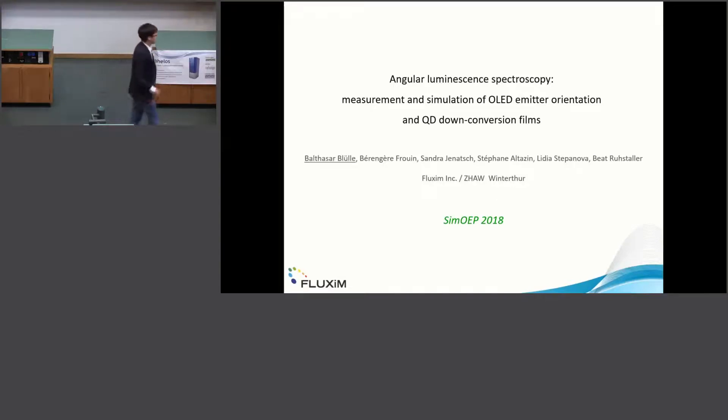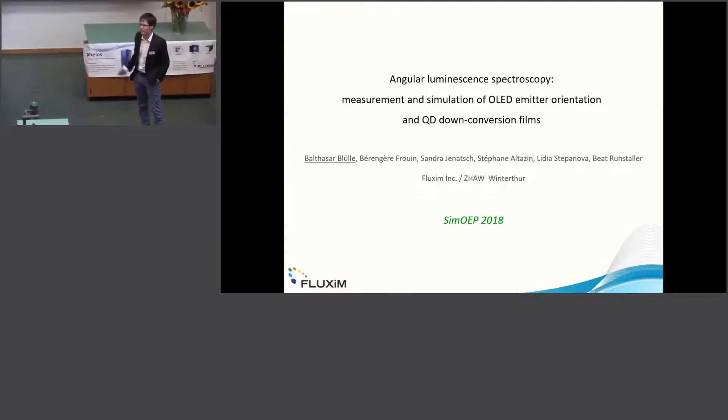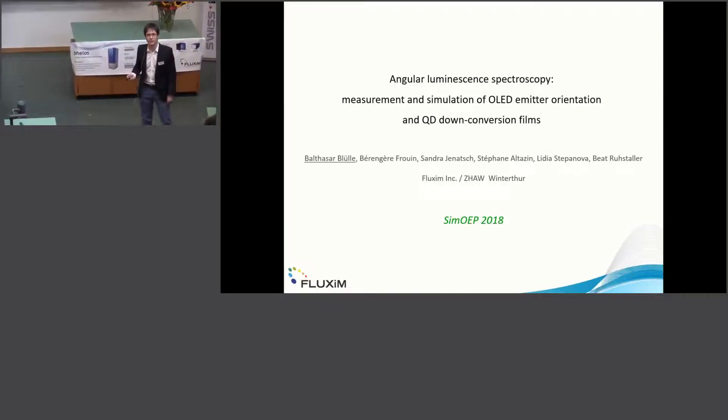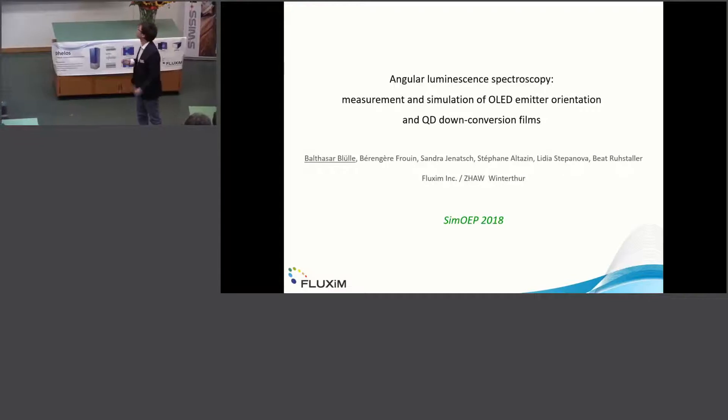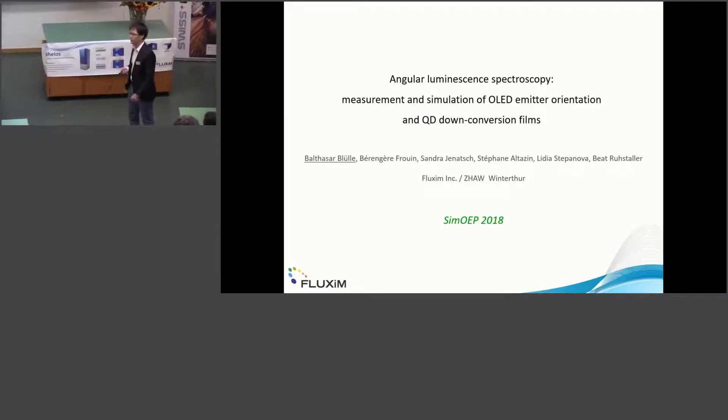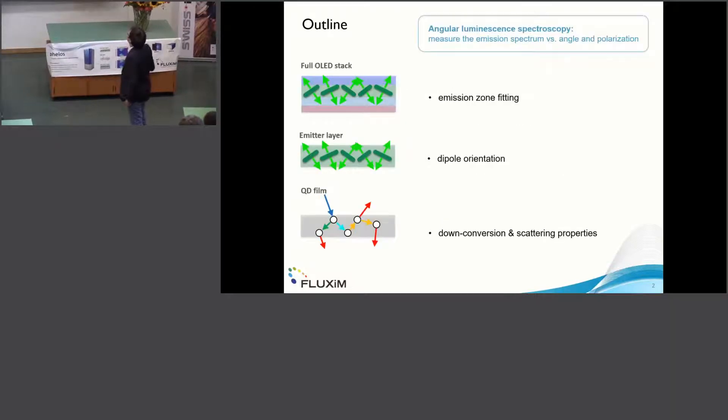Thank you very much for your kind introduction and welcome to my presentation. During the last two or three days, we have already heard quite some talks where angular luminescence spectroscopy has been used to determine the emission zone in a full stack OLED or OLEC. What is angular luminescence spectroscopy? It's as simple as that. We just measure the emission spectrum, be it electroluminescence or photoluminescence, as a function of the emission angle.